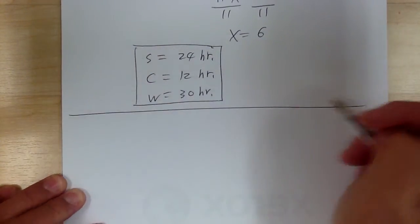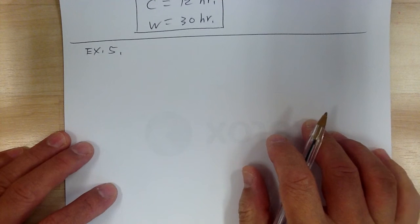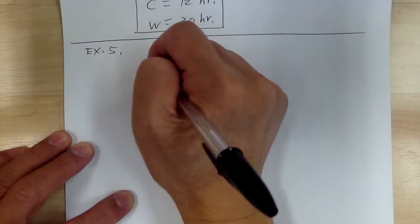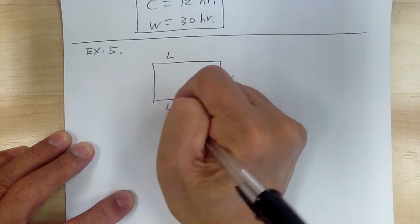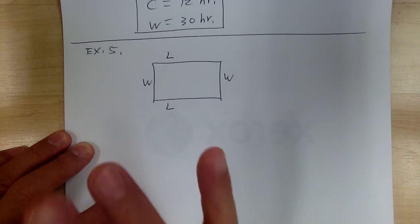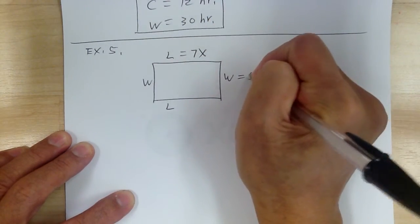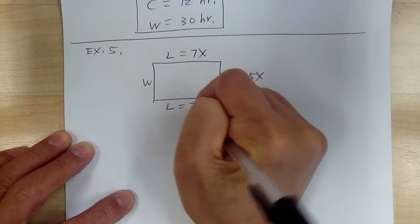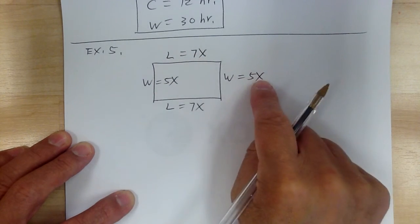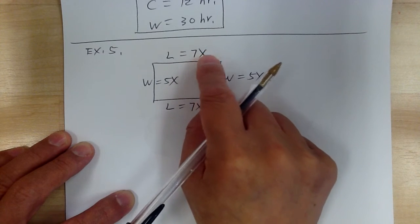Let's go to example 5. The length and width of a rectangle are in a ratio of 7 to 5. When you see the word rectangle, draw your rectangle and label all four sides — length, width, length, width. The ratio of length to width is 7 to 5, so label the sides 7x, 5x, 7x, and 5x. You always need to put in a multiplier when dealing with ratios so you can get back to the original number.